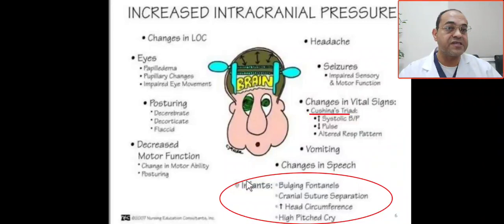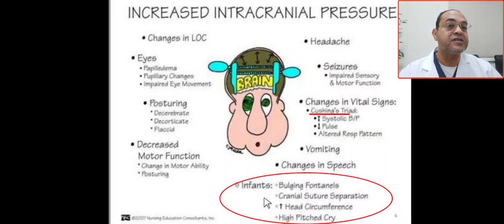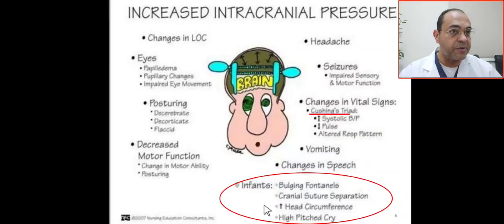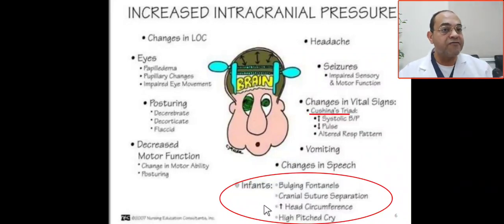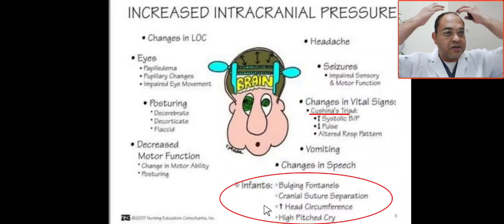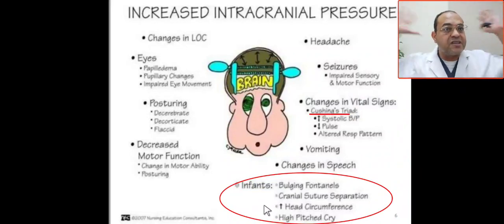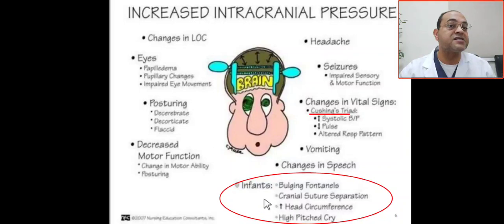In infancy, the signs of increased intracranial pressure include bulging anterior fontanelle, cranial suture separation, increased head circumference, and a high-pitched cry. These are the key clinical signs of raised intracranial pressure in infants.